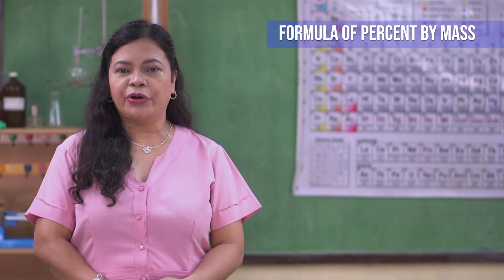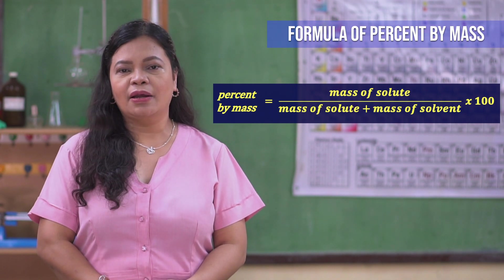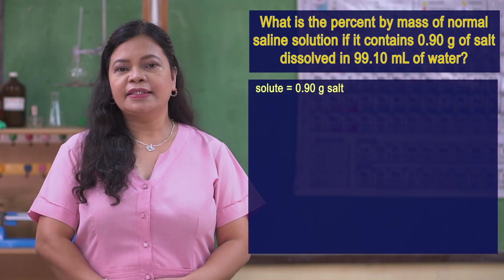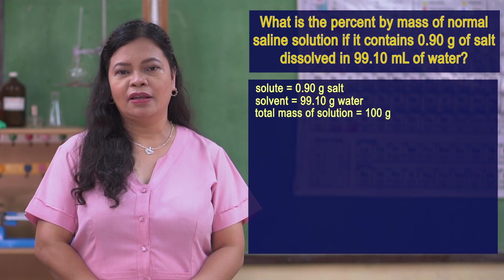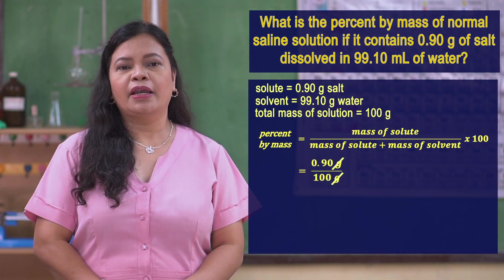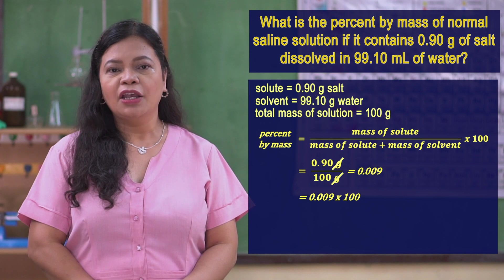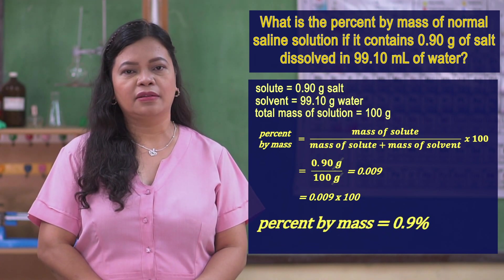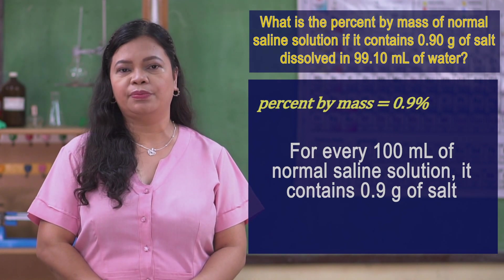To calculate the percent by mass, we must divide the mass of solute by the sum of the mass of solute and solvent and multiply the quotient by 100. Since 0.90 grams of salt is our solute and 99.10 grams of water is our solvent, the total mass of the solution is 100 grams. Using the formula, we divide 0.90 grams by 100 grams to get the quotient, which is 0.009. We multiply this value by 100 to get the final answer. This means that the concentration of the normal saline solution is 0.9%, meaning every 100 ml of normal saline solution contains 0.9 grams of salt.